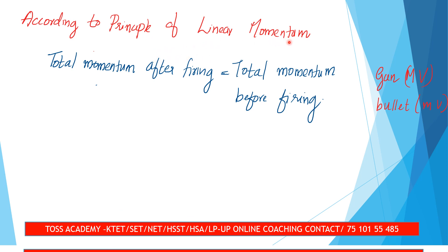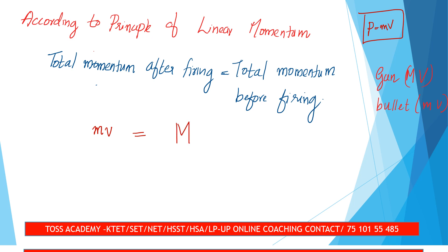According to the principle of conservation of linear momentum, the total momentum after firing is equal to the total momentum before firing. Before firing, both the gun and bullet are at rest, so the initial momentum is zero. After firing, the total momentum equals M into V (gun) plus m into v (bullet), which must equal zero.